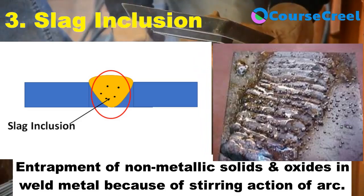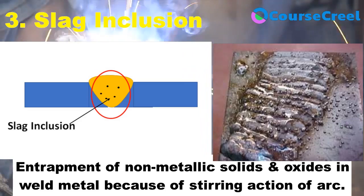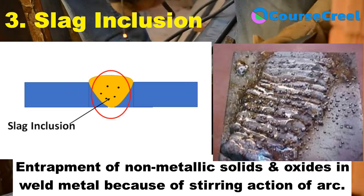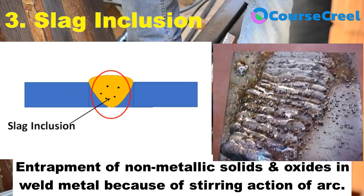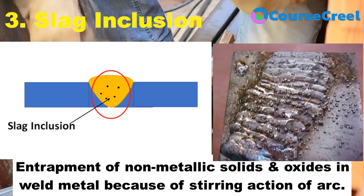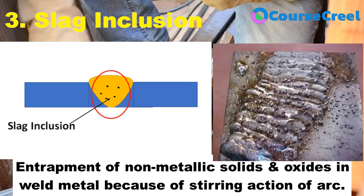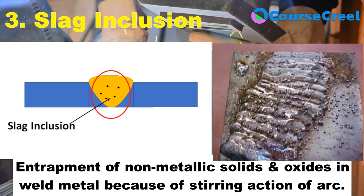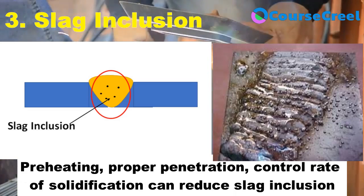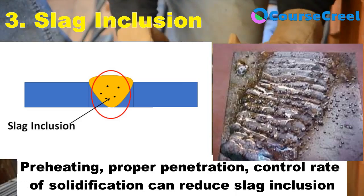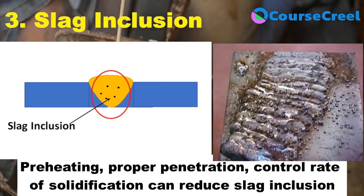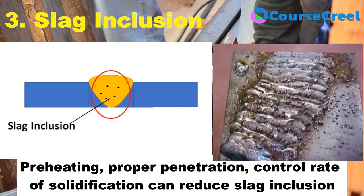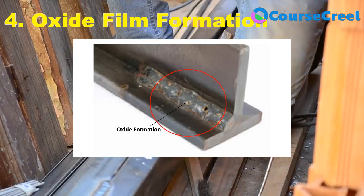The next type of defect is slag inclusion. It mainly happens because of entrapment of non-metallic solids and oxides in the weld metal or between weld metal and base metal. This defect occurs because of the stirring action of the arc, which forces slag down into the weld metal where it solidifies during cooling. To reduce slag inclusion, preheating, proper penetration of the groove, and control of the rate of solidification are recommended.